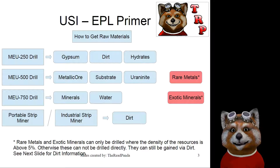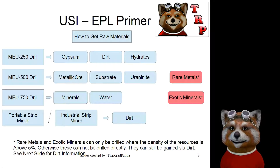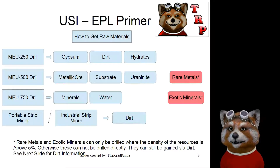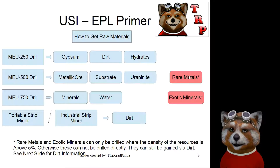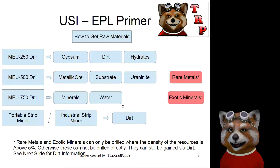The MEU series of drills are for specific types of materials, and the strip miner drills are for dirt. The MEU-250 drill gets you gypsum, dirt, and hydrates. You can get metallic ore, substrate, uranium, or uranite from the MEU-500 drill, and the MEU-750 drill gets you minerals and water. If your concentration is above five percent, you can also get rare metals and exotic minerals from those drills. If the concentration level is below five percent where the drill is located, you cannot mine that material.